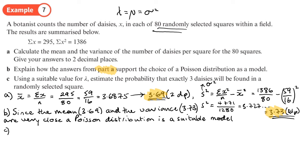Right, part c: using a suitable value for lambda, estimate the probability that exactly three daisies will be found in a randomly selected square. Let's have a look at our two numbers: 3.69 and 3.73. Now a suitable number would be 3.7 because they both agree to one decimal place. They don't agree to two decimal places but to one decimal place. So I'll put: since the mean and the variance agree to one decimal place as 3.7, we're going to choose lambda as 3.7—that would be a sensible choice.